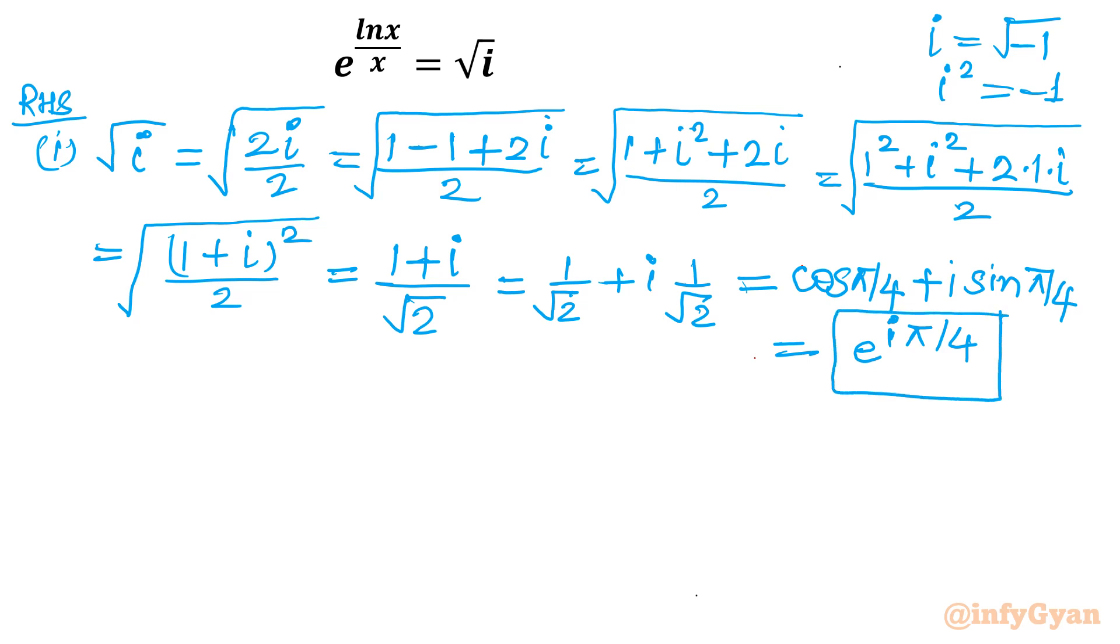Now I will solve or I will simplify RHS again using Euler's identity. That is my second approach. e raised to the power i theta. It is cosine theta plus i sin theta using Euler's identity or theorem. Now I will substitute theta is equal to pi by 2.